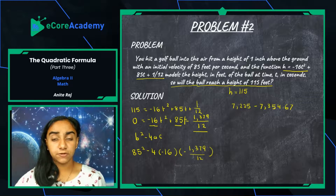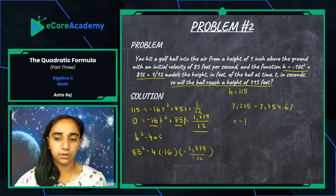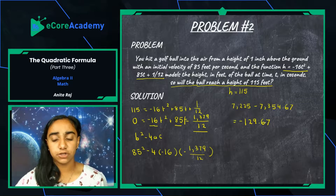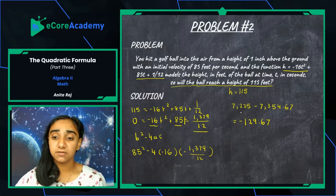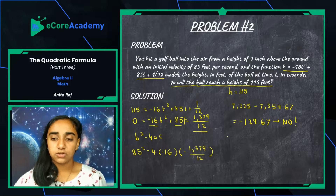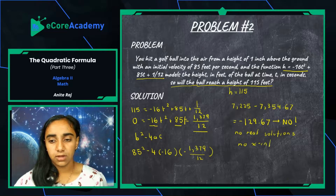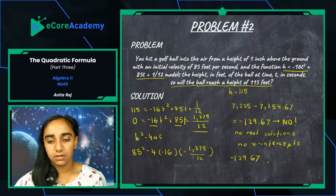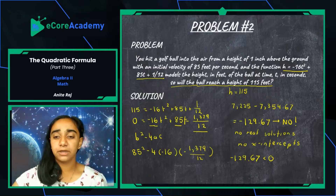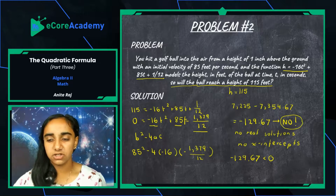The discriminant is approximately negative 129.67. Now we answer the question: will the ball reach a height of 115 feet? The answer is no, because the discriminant is negative. If it were positive you could say yes, but because it is negative we say no — it will not reach a height of 115 feet. This parabola has no real solutions and no x-intercepts because negative 129.67 is less than zero.